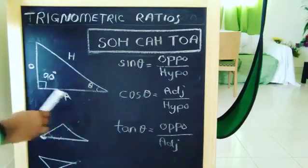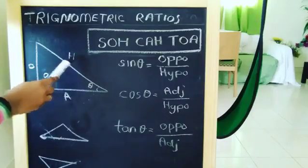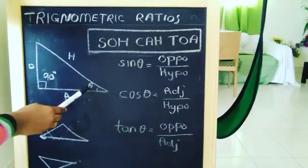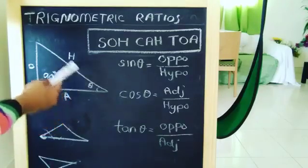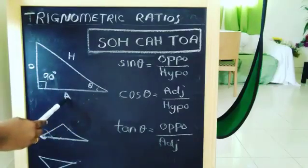The condition is the triangle has to be right angle. The side opposite to the 90 degrees is known as the hypotenuse, or the longer side is the hypotenuse. If you take this as theta, the side opposite to it is the opposite and the side near to it is the adjacent.